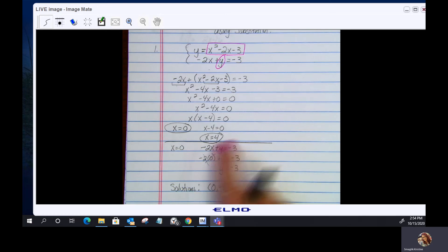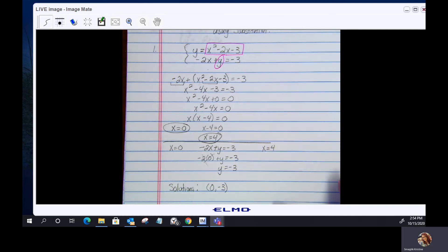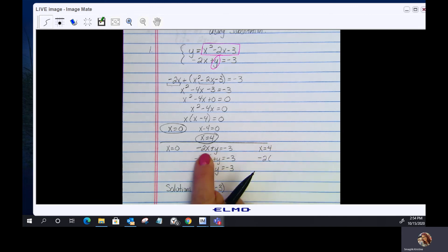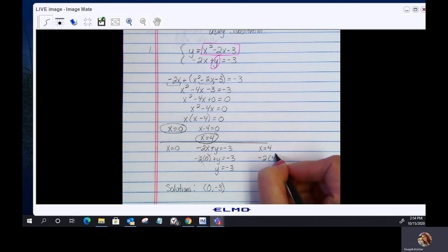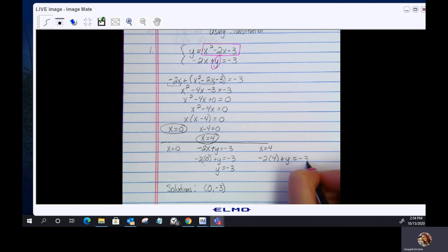Now let's find the corresponding y for x equals 4. So again, I'm just going to use that same equation. So I would have negative 2 times, I'm going to substitute 4 for the x, plus y equals negative 3.